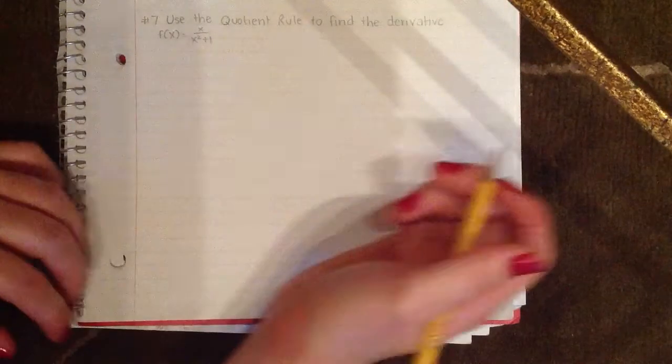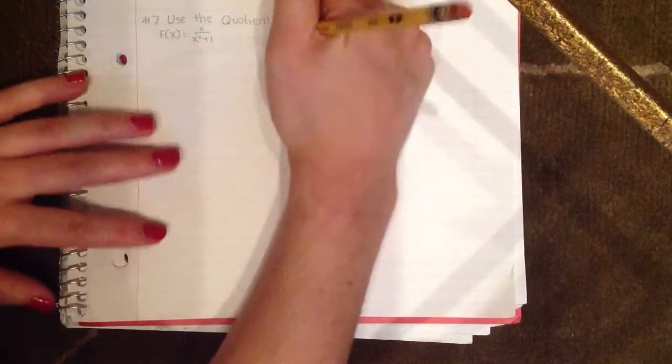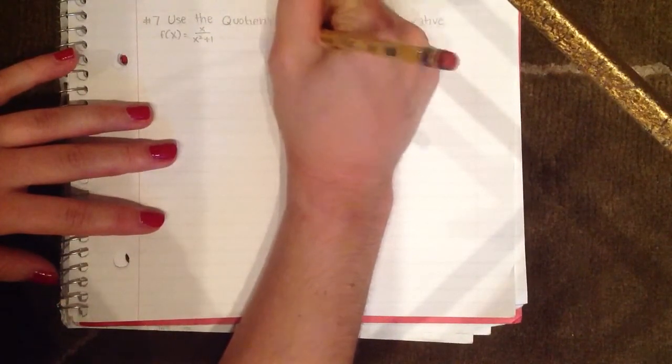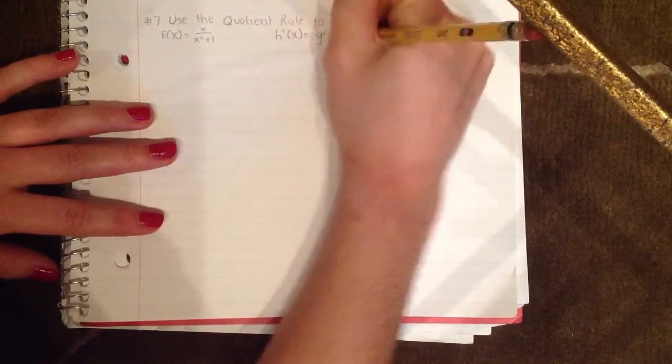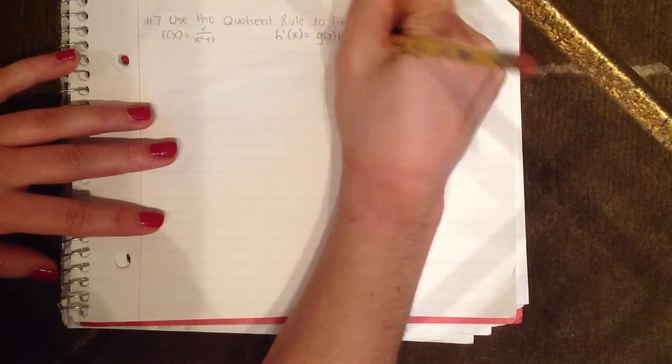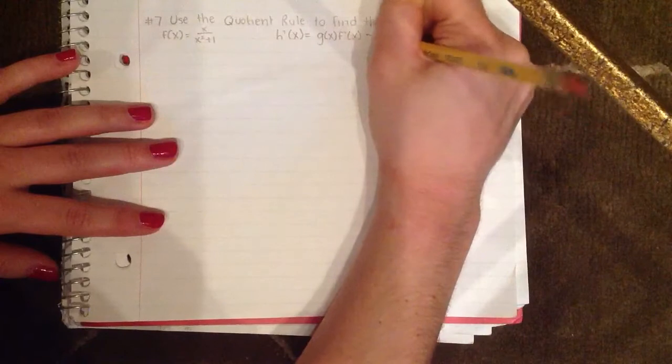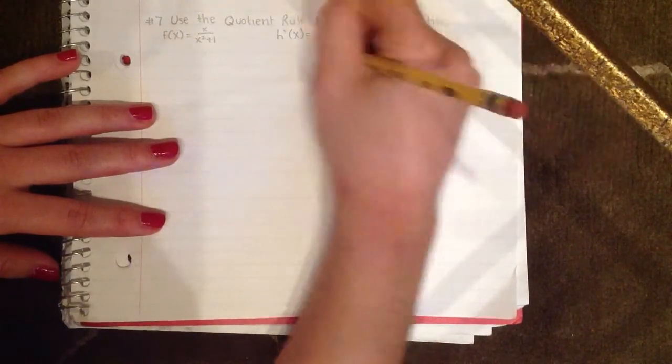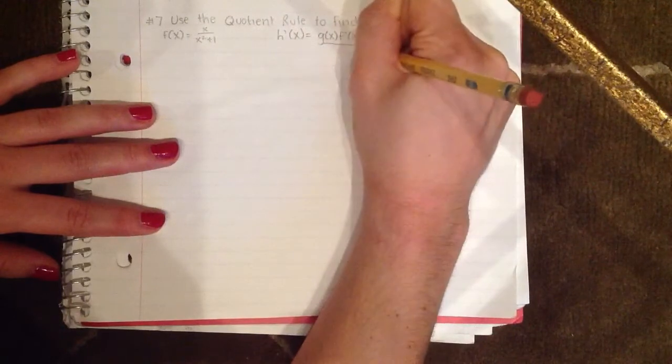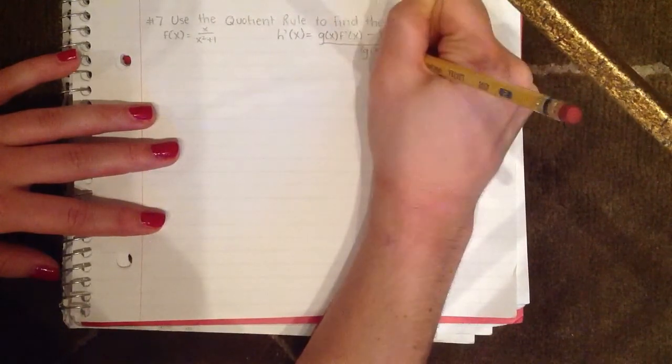So the first thing I'm going to do is write out what the quotient rule states, and that is h'(x) = g(x) × f'(x) - f(x) × g'(x) all over g(x)².